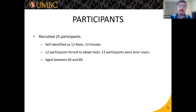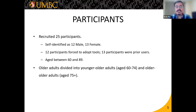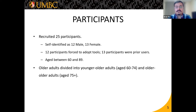We recruited a total of 25 participants with a fairly even male/female split. 12 were forced to adopt tools due to the pandemic, while 13 were prior users. We defined older adults as above age 60 — the youngest was 60 and the oldest was 89. We split participants into two subgroups based on evidence of a digital divide within the older community: 15 younger older adults (ages 60–74) and 10 older older adults (age 75+), to explore differences in usability and privacy concerns between these groups.